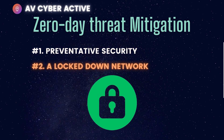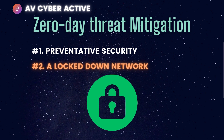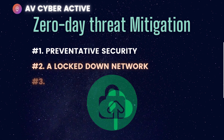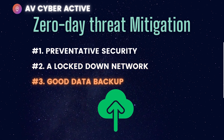Number two: a locked-down network. Should a zero-day threat materialize on your network, your next goal should be to limit its effects. You do this by restricting user access to only the essential files and systems, limiting damage to the smallest number of systems. This is also where the principle of least privilege comes into play — users in your accounting department shouldn't have access to the sales department database, and vice versa.